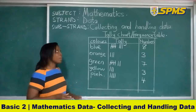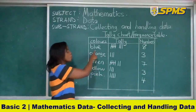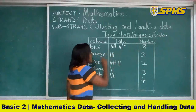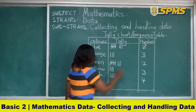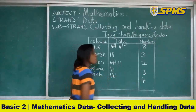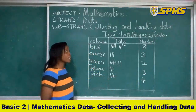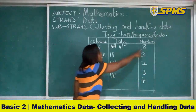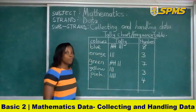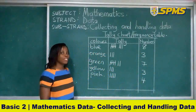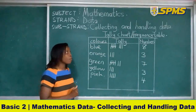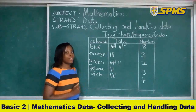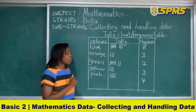Let's answer the following questions using the frequency table or tally chart. Question number 1: What is the total number of pencils collected? Looking at the table, you can see blue is 8, orange is 3, green is 7, yellow is 3, and pink is 4. So how will you get the total? You just add the numbers in the third column. After adding, the answer is 25 pencils were collected.